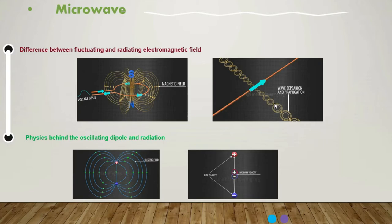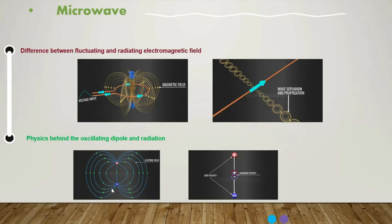Before looking at how the antenna is made, let's understand the physics behind electromagnetic wave separation. Physical behind oscillating dipole and radiation. Consider when positive and negative charges are placed a distance apart. This arrangement is known as a dipole, and they produce an electrical field, as you can see here in this graph.